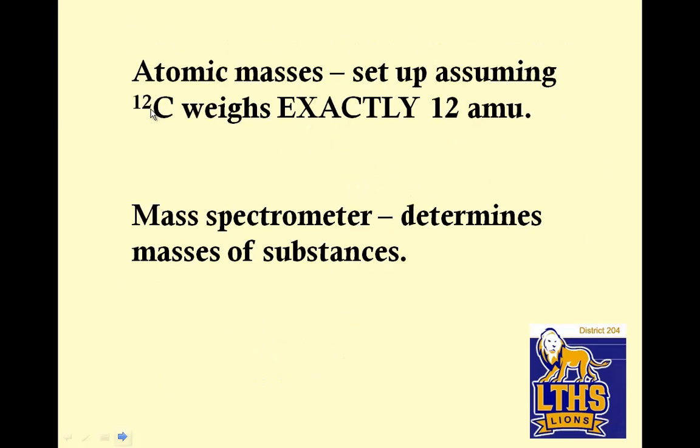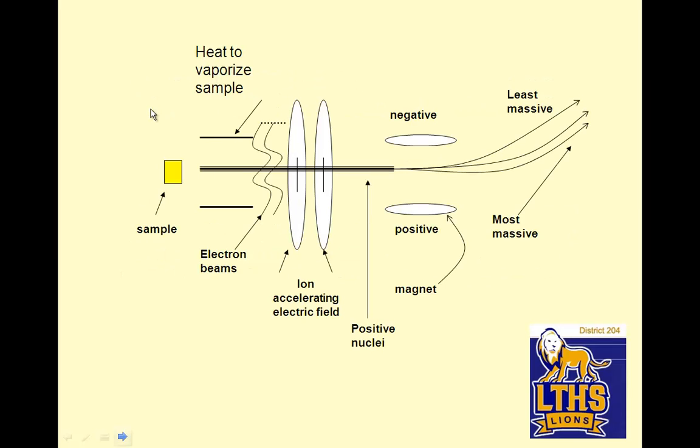Atomic masses are set up assuming carbon 12 is exactly 12 atomic mass units. The mass spectrometer determines the masses of substances. We use our reference of carbon 12, and you take a sample, and you turn it into a gas, you zap it with a bunch of electrons, so all you have is the nucleus. This is the nucleus only.